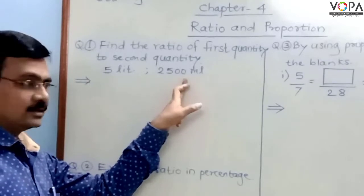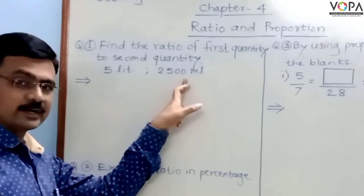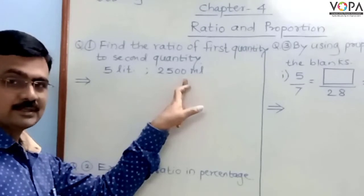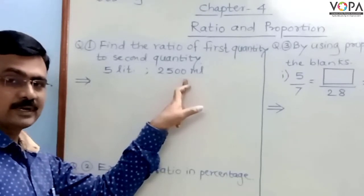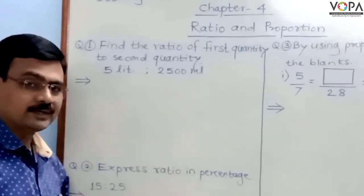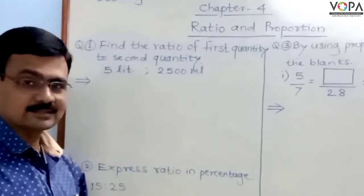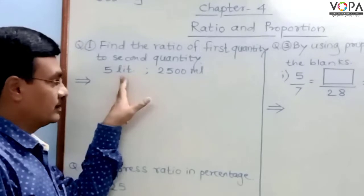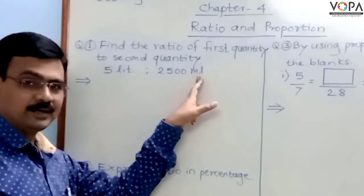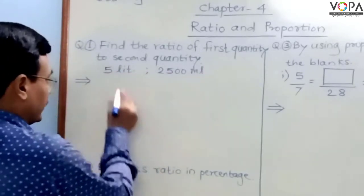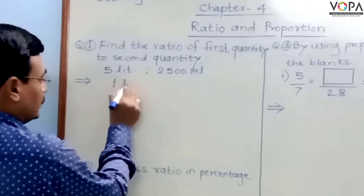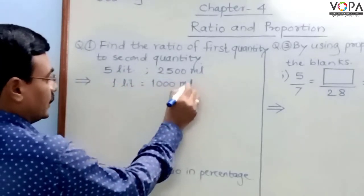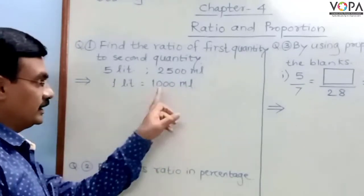The two quantities in a ratio must have the same units. One quantity is in liters and the second is in milliliters. All of you know that 1L is equal to 1000mL.